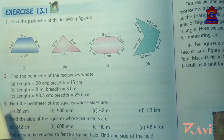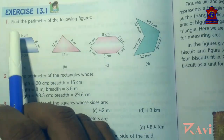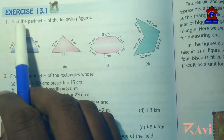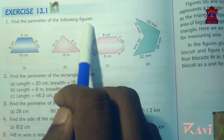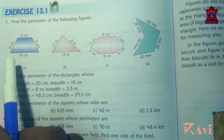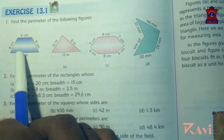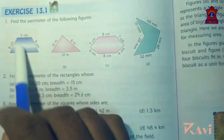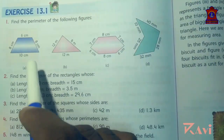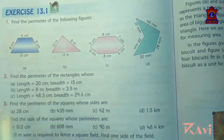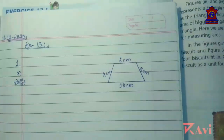Look at question number 1: find the perimeter of the following figures. To find the perimeter of these figures, you need to draw these figures in a notebook. See how I have done it — you have to do it in the same manner.